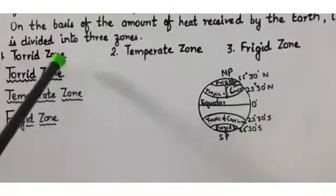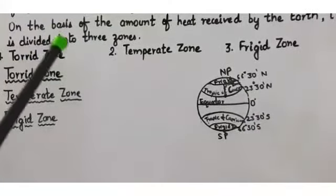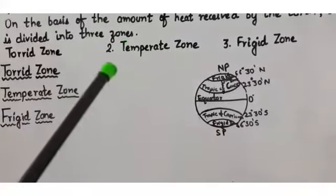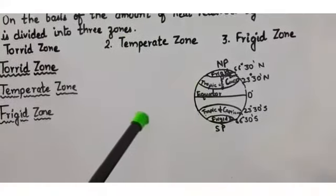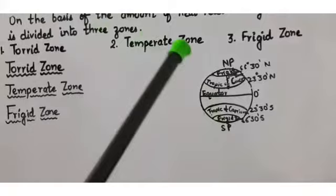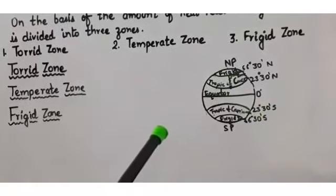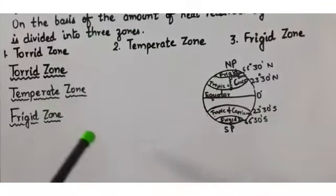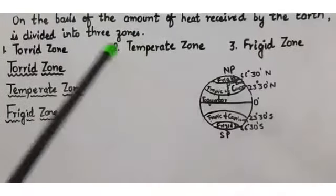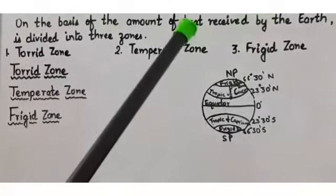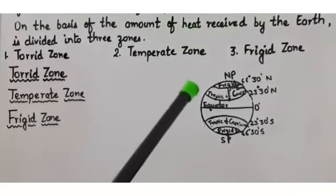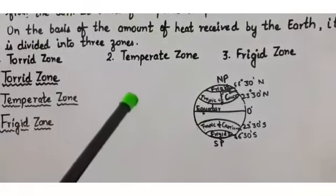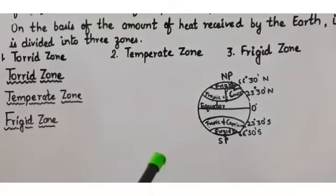To summarize: the torrid zone is the hottest part of the Earth; the temperate zone is moderate — neither too hot nor too cold; and the frigid zone is the coldest. Today we have completed all three temperature zones of the Earth. In the next video, we will start with the weather and climate of the Earth. Thank you!